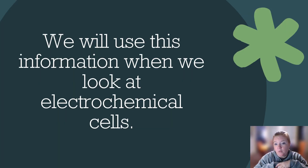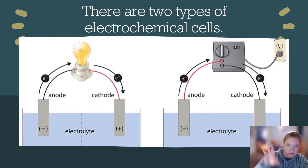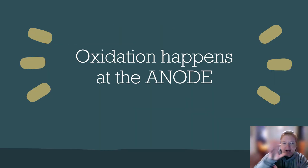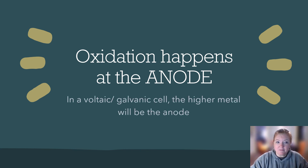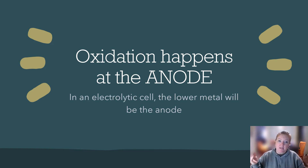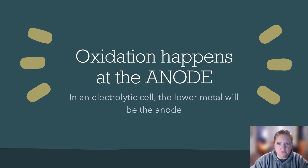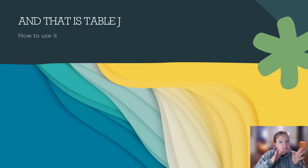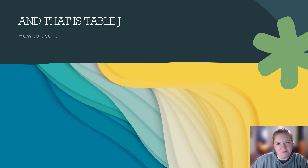We'll use this information when we look at electrochemical cells. There are two types: voltaic (or galvanic) cells and electrolytic cells. Oxidation happens at the anode. In a voltaic or galvanic cell, the higher metal on Table J will be the anode. In an electrolytic cell, it will be the lower one. We'll discuss why that happens, but understanding Table J is essential for electrochemical cells, which is our next topic.